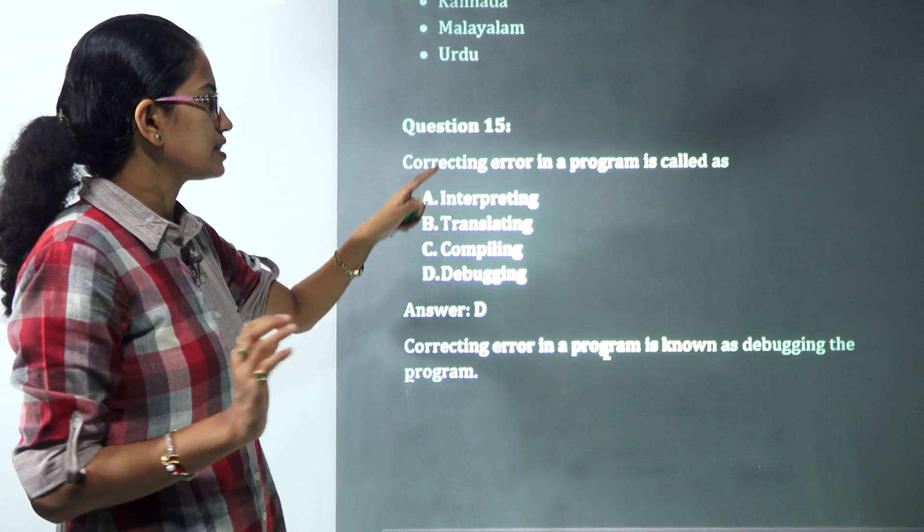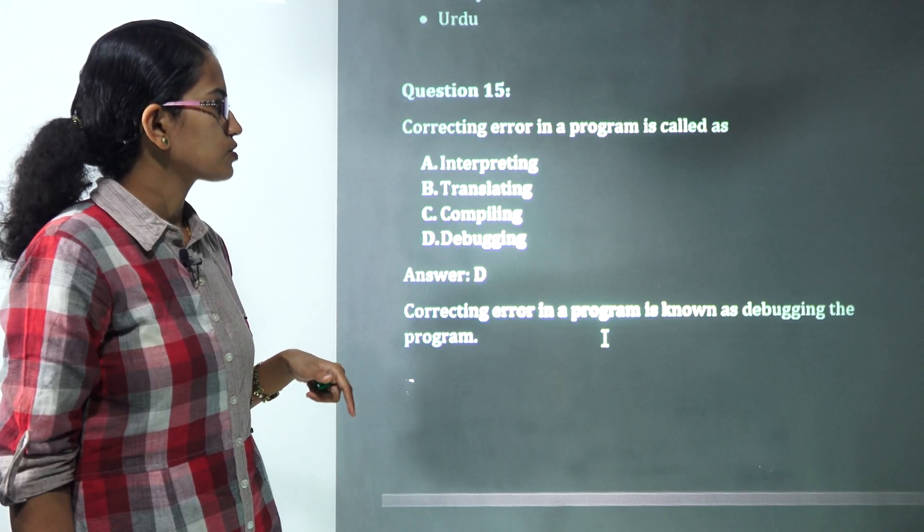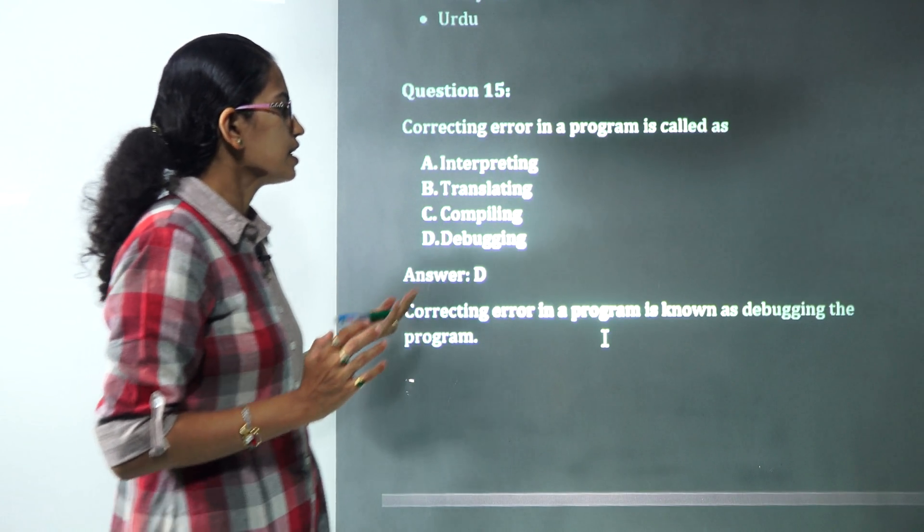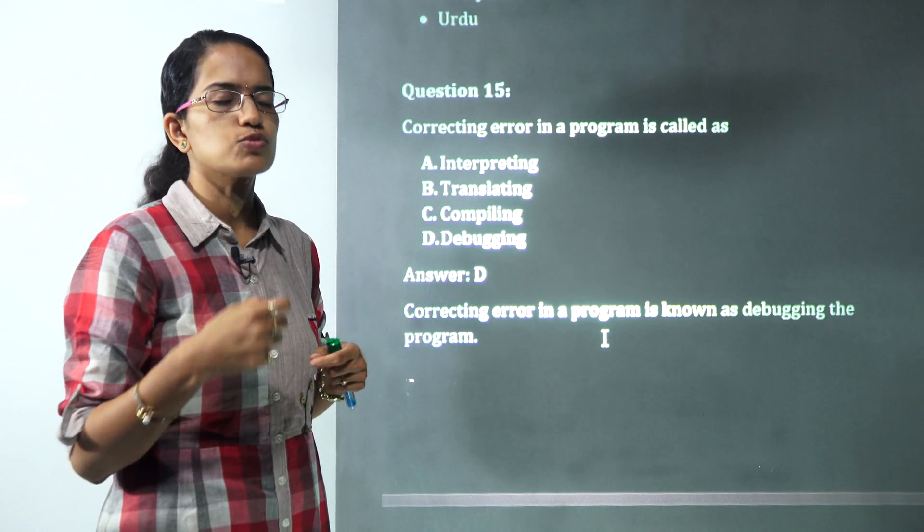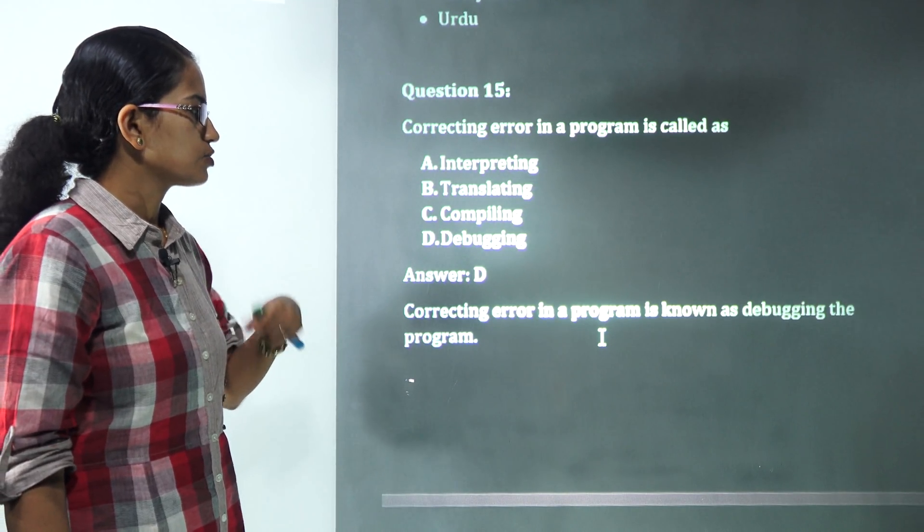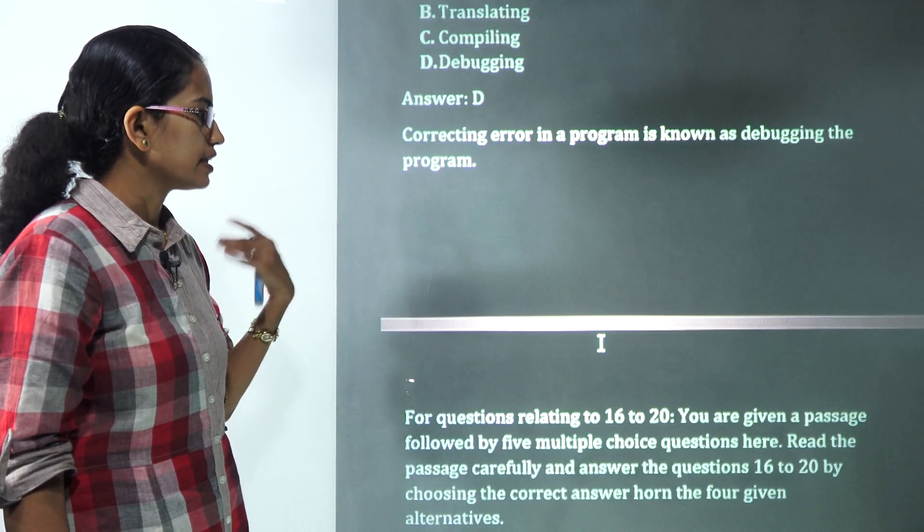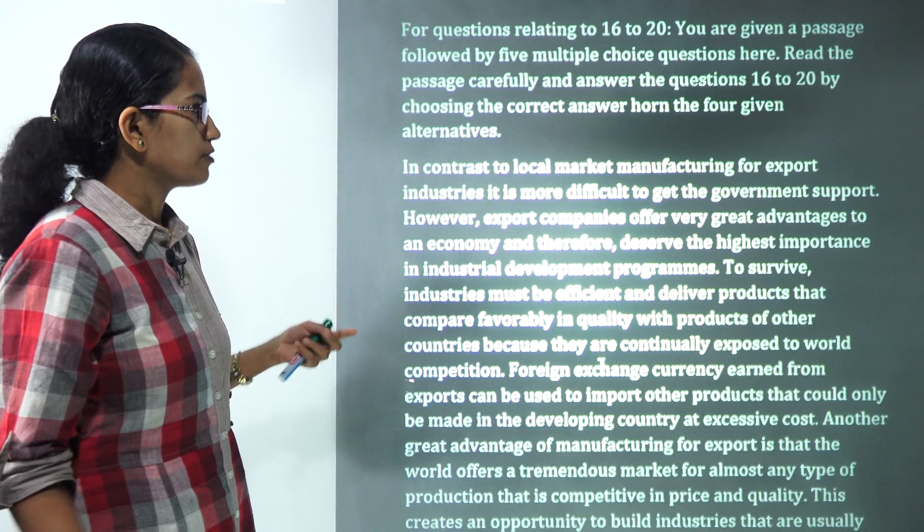The correcting error in a program is called as. Correcting error basically talks about checking anything that is fault in the system. You have debugging as the correct answer. You basically debug, you correct the error in the programming and work around it.